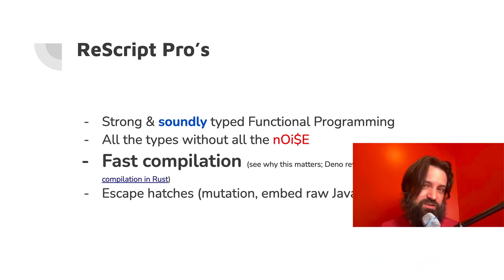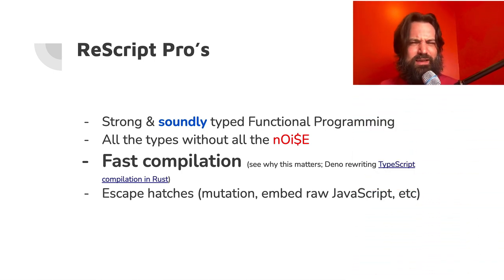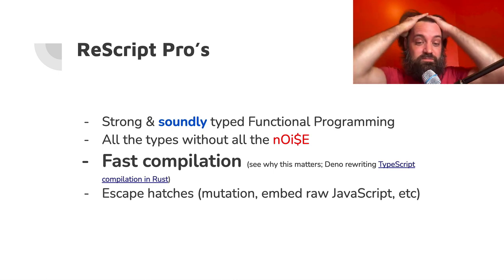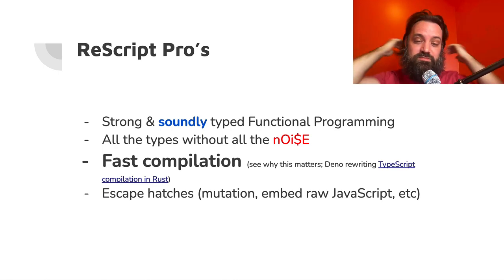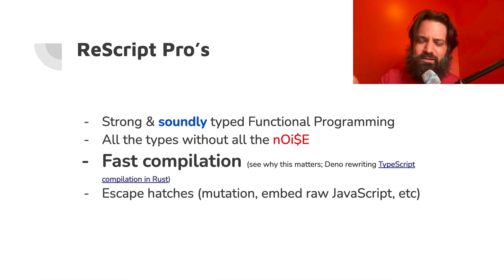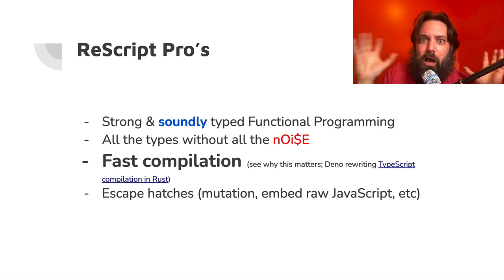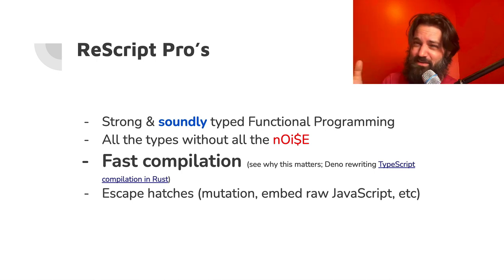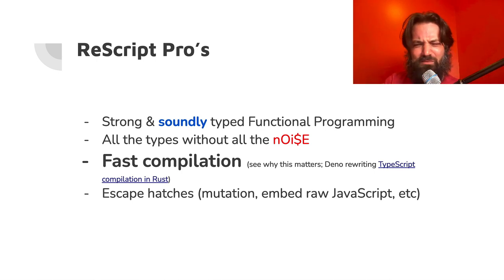But ReScript still has escape hatches — some I like, some I think are horrid. You can do mutation. Although most functional programming languages, even non-strongly-typed ones like Elixir or Erlang, don't mutate things, ReScript says 'you can do it, here's a safe way.' You can even embed raw JavaScript as a string and run it — which is bonkers. The last time I saw that was in Scala where they instantiated a Node.js runtime inside the JVM.